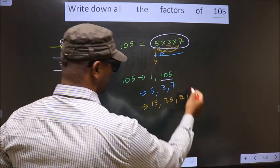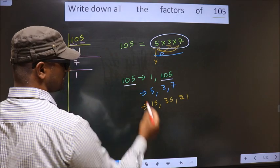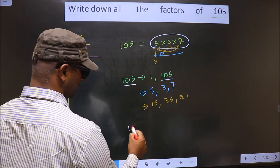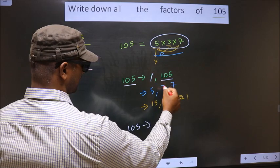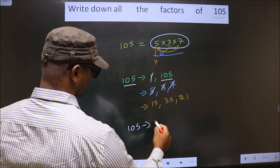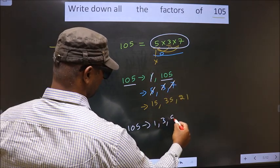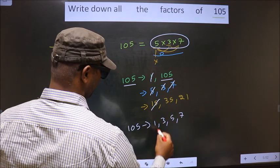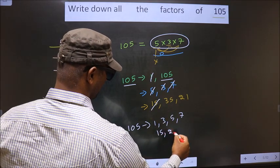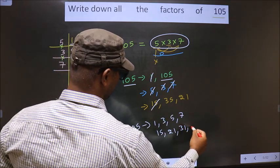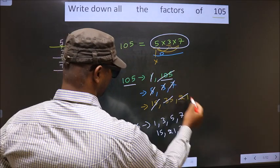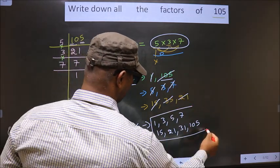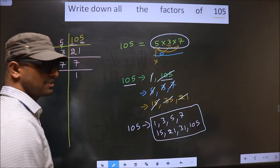So thus these are all the factors of 105: that is 1, 3, 5, 7, 15, 21, 35, 105. So these are all the factors of 105.